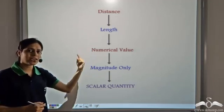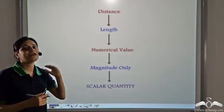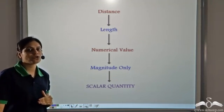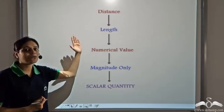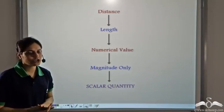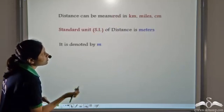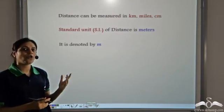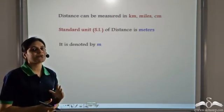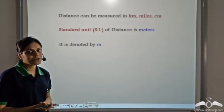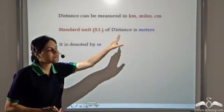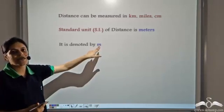Distance just tells us how much a body had to travel to reach a point — that is, how much did Jerry have to travel to get to the cheese. We can measure distance in kilometers, miles, or centimeters. However, the standard unit for measuring distance is meters, denoted by m.